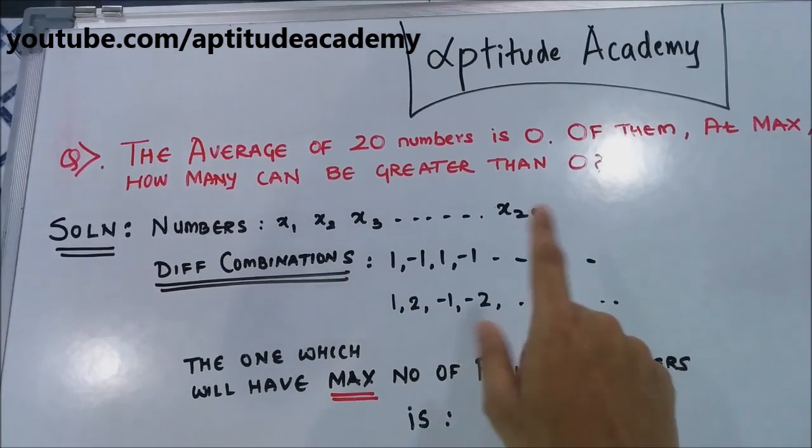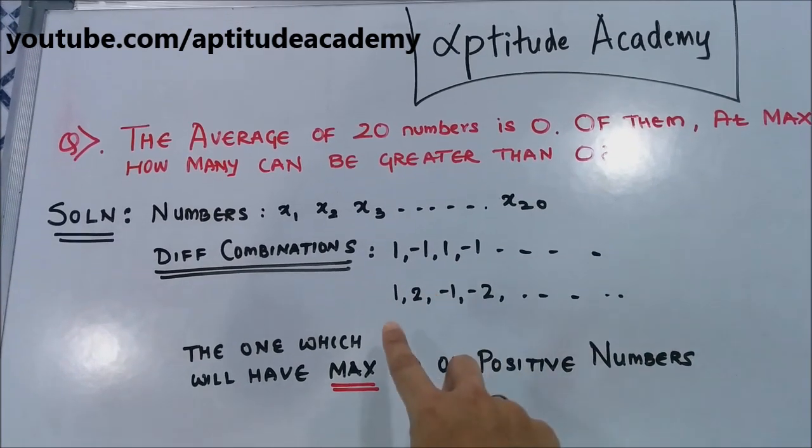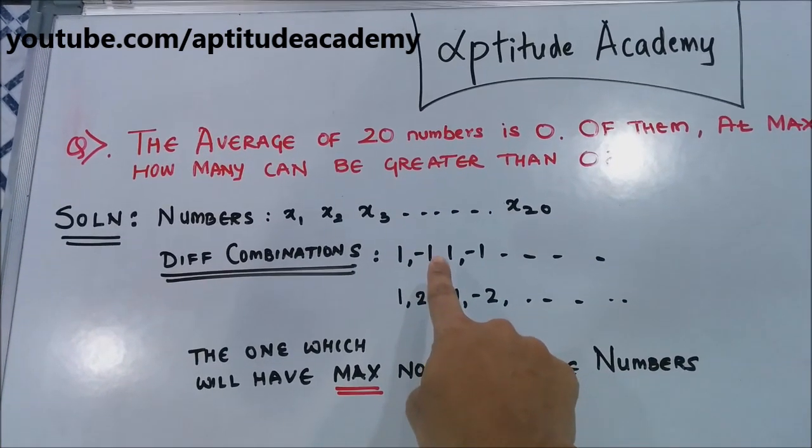In either of the cases, the number of positive numbers will be 10. You will have 10 plus 1 here and 10 minus 1 here.